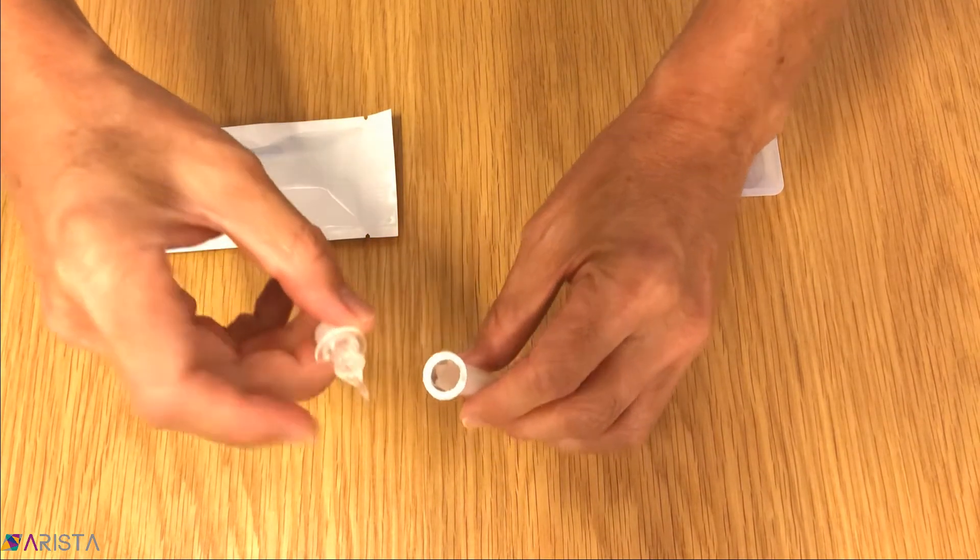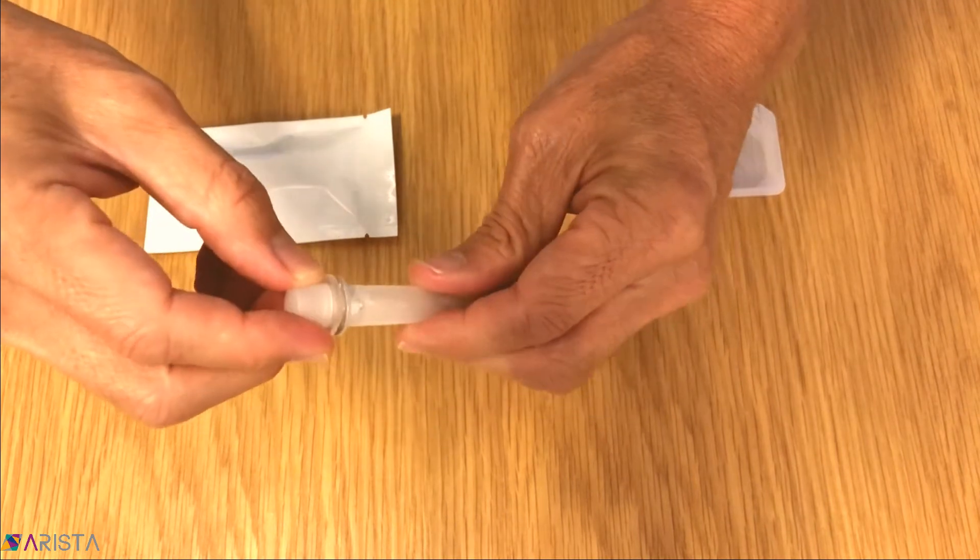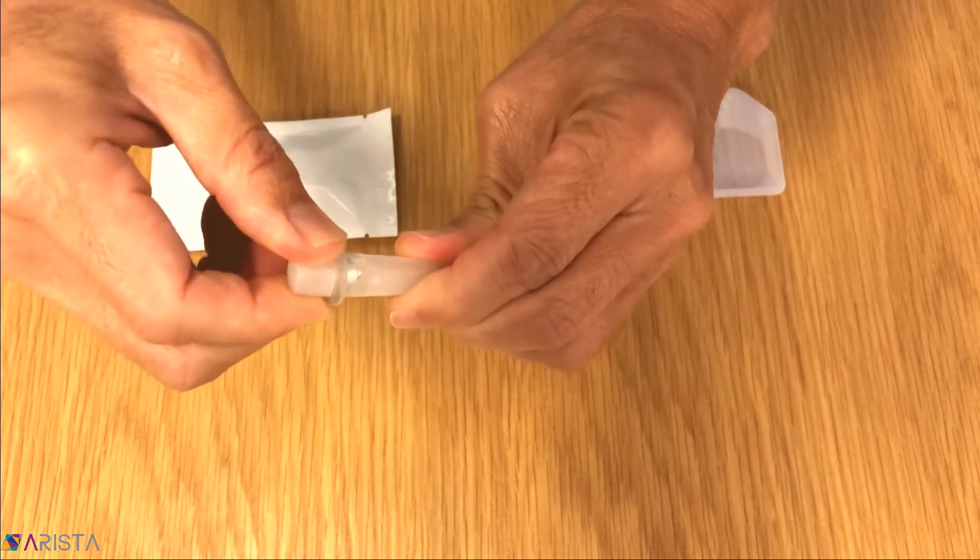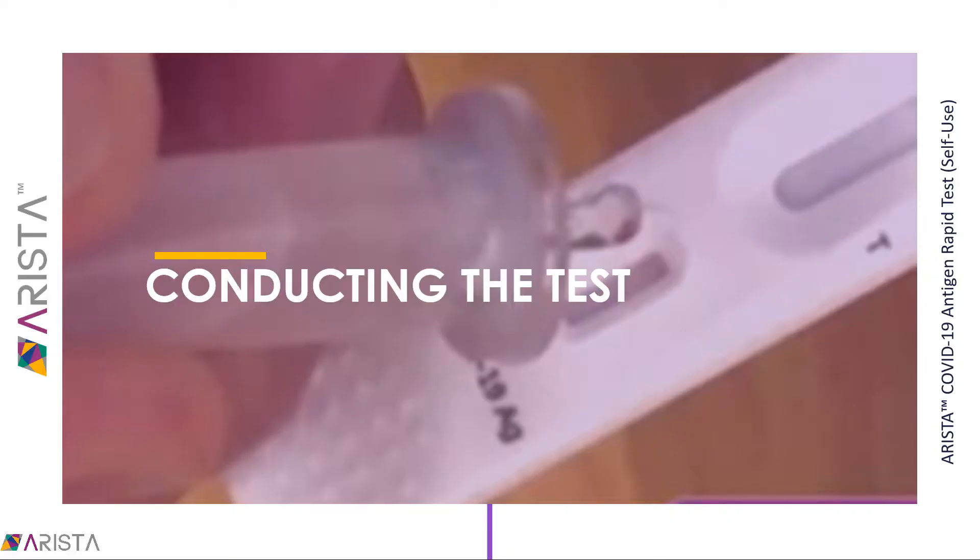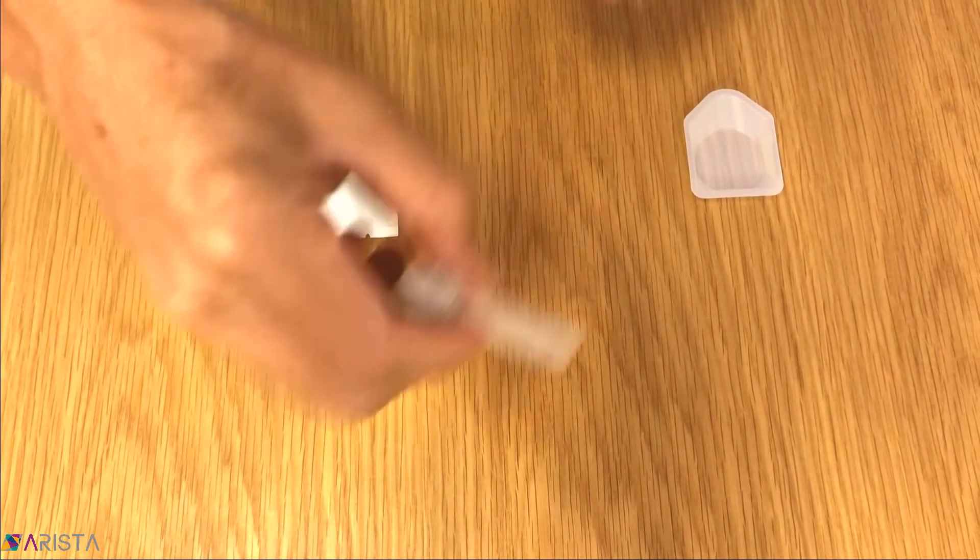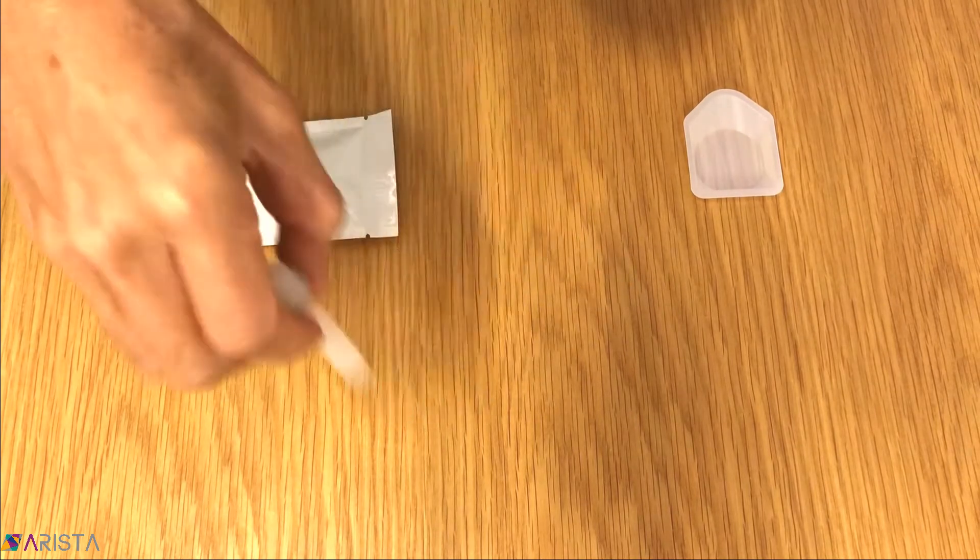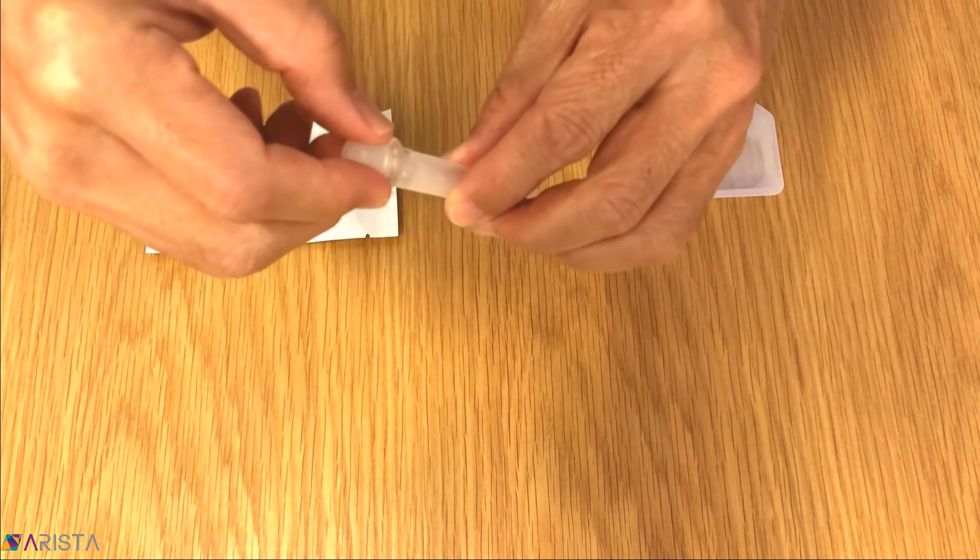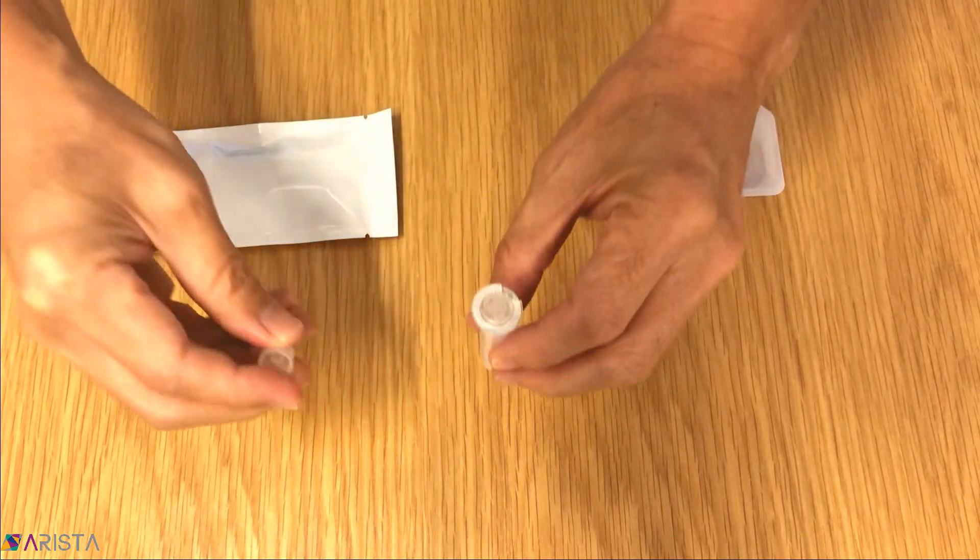Hold the dropper by the protective cap and insert the long pointed end into the tube until it is securely fitted. Gently mix the sample again by rotating the tube for five seconds in a stirring motion. Then remove the protective cap from the dropper.